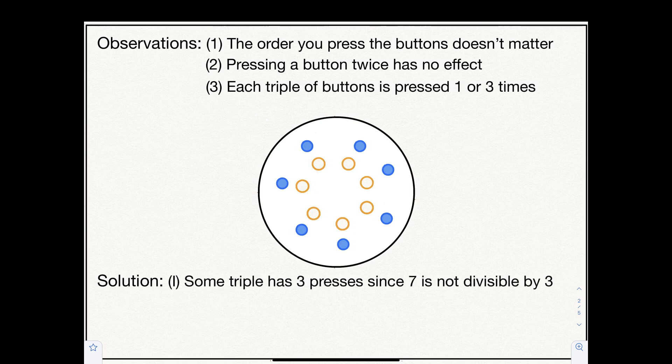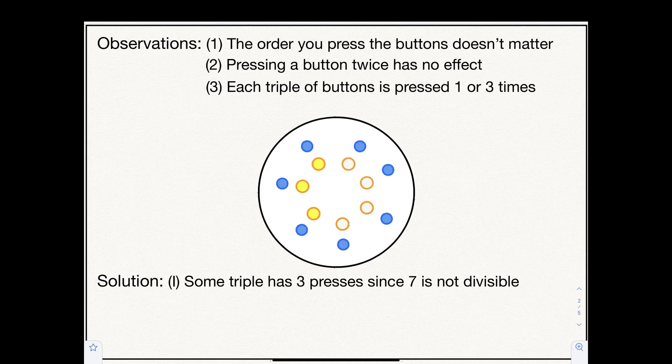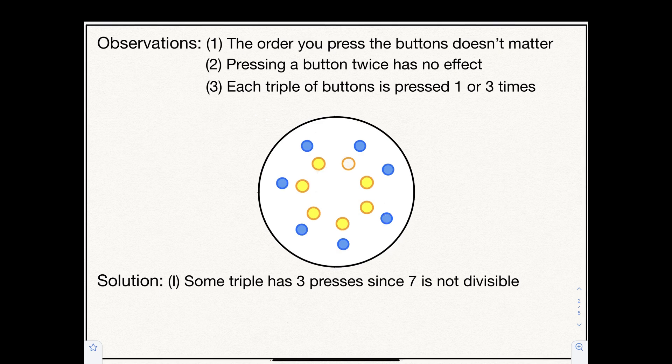Using exclusively one press per triple would only work if seven were divisible by three, which it's not. So some triple has three presses.